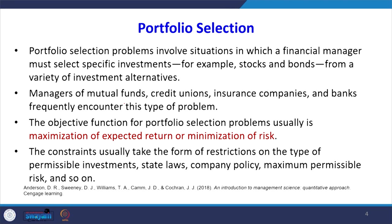The objective function for a portfolio selection problem is usually the maximization of expected return or minimization of risk. The constraints usually take the form of restrictions on the type of permissible investments, state laws, company policy, maximum permissible risk, and so on. These become our constraints.